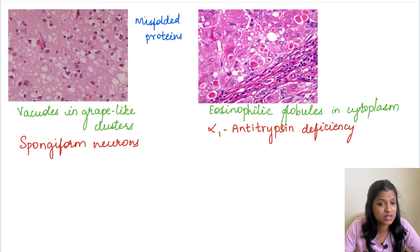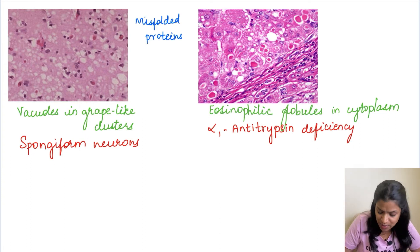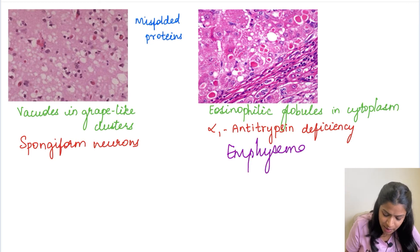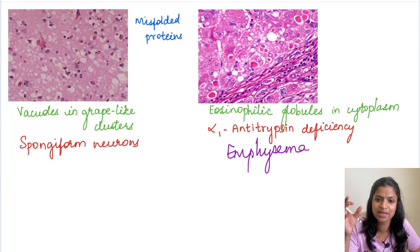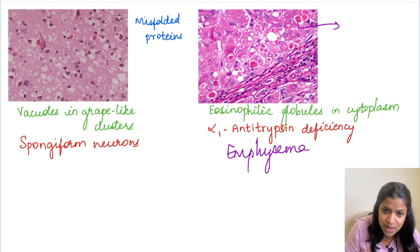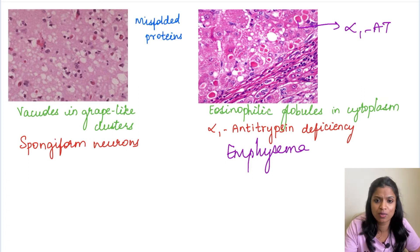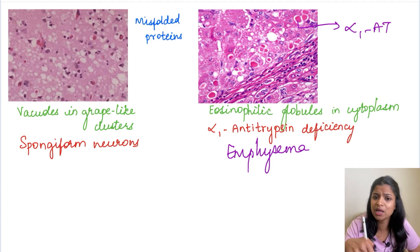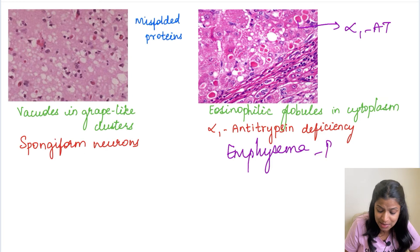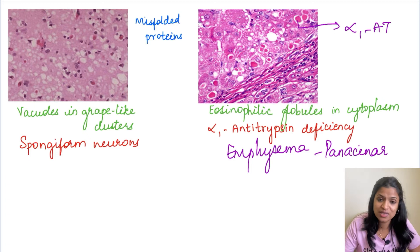Moving to other examples of misfolded proteins: alpha-1 antitrypsin deficiency results in two conditions — emphysema in the lung, and in the liver it produces characteristic eosinophilic globules in the cytoplasm of hepatocytes, representing the misfolded alpha-1 antitrypsin. Alpha-1 antitrypsin is a serine protease inhibitor needed to control inflammation. When this enzyme is deficient, proteases continue to act unopposed, resulting in tissue damage and emphysema — specifically a panacinar type of emphysema.